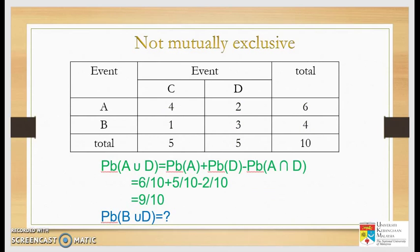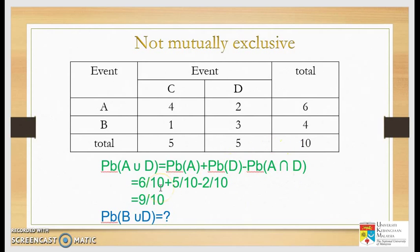Now, how about the addition rule for probability of A or D? Using the addition rule: probability of A or D equals probability of A plus probability of D minus the intersection. We have probability of A as 6 over 10, probability of D as 5 over 10, and probability of A and D as 2 over 10, giving 10 over 10. Please calculate this on your paper.